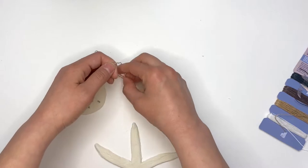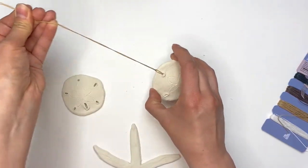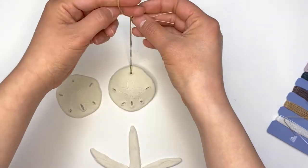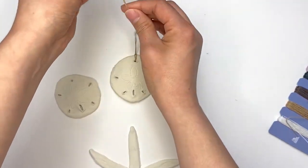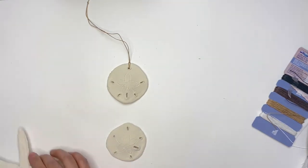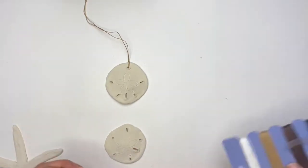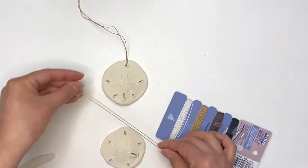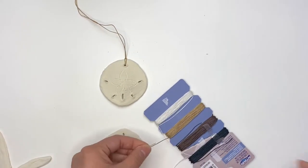So I folded my cord in half and then I put the loop side through the back of my sand dollar through the top hole, and then I grabbed the ends of the cord and put them through the loop, pulled, and then I created a knot on the top. To attach the next sand dollar, I grabbed another piece of cord and I attached it the same way I did the hanging string on the previous sand dollar.